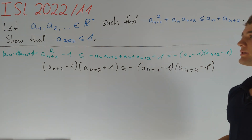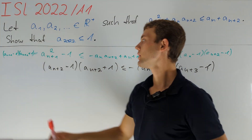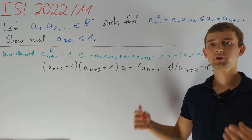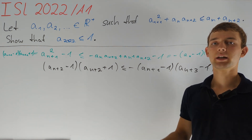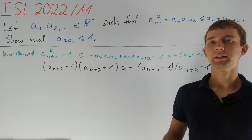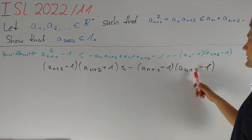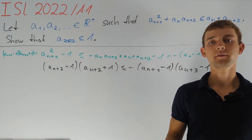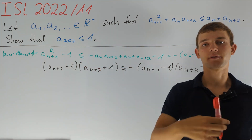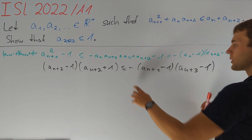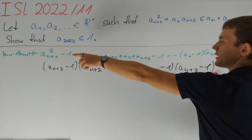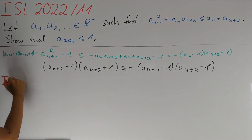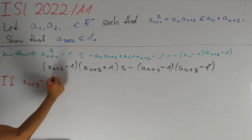We want to combine our two inequalities, and since we have (aₙ₊₁ minus one) here, it is a good idea to multiply the first one by minus (aₙ₊₃ minus one). When multiplying both sides of an inequality by a factor we have to be careful of its sign. One way to handle this is to restrict to the case that aₙ₊₃ is less than or equal to one, or greater than or equal to one. We now consider the case that aₙ₊₃ minus one is less than or equal to zero.